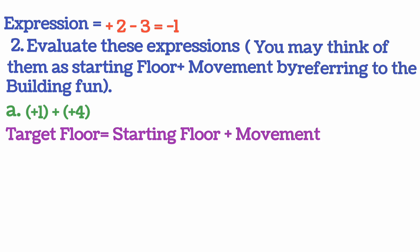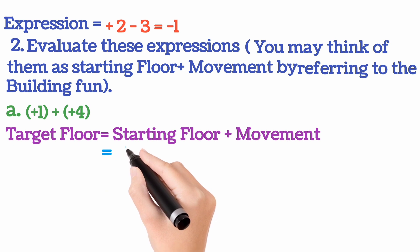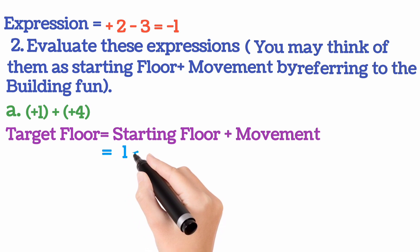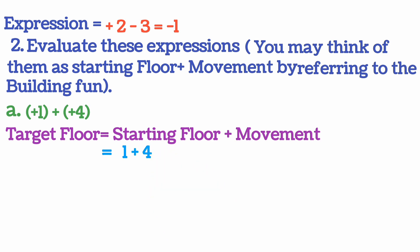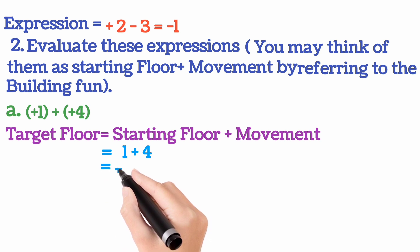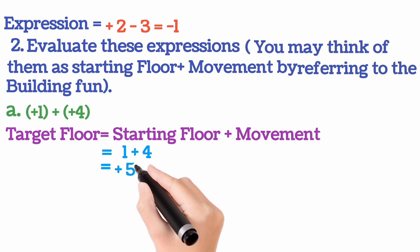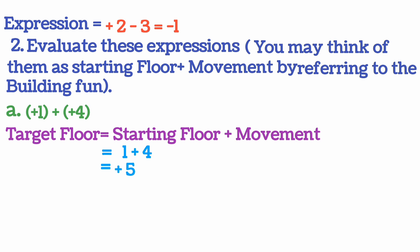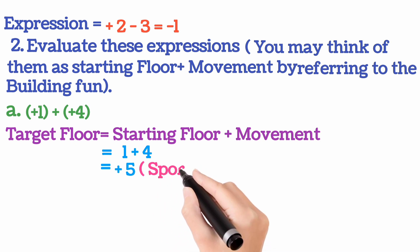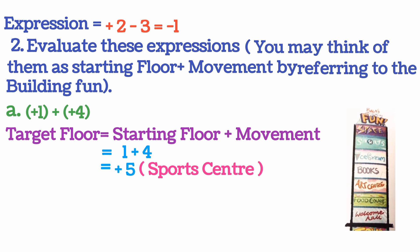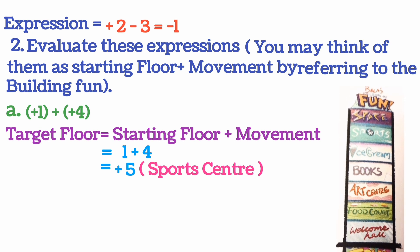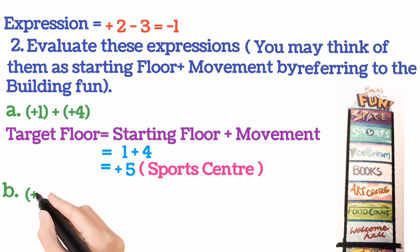We are at present in plus 1, meaning the first floor, so write plus 1. We place the button plus 4 inside the lift. So 1 plus 4 equals 5 — we reached the 5th floor. You see the picture: basement, 1st floor, 2nd floor, 3rd floor, 4th floor, and 5th floor is the sports center. So we reached the sports center.